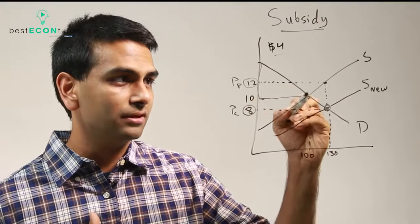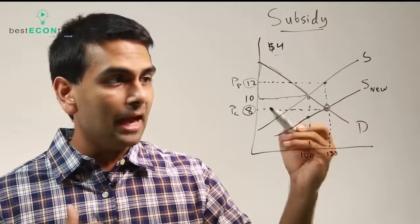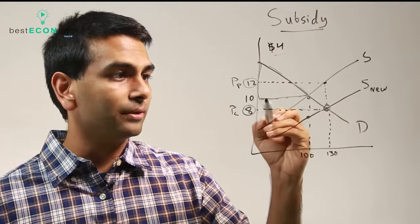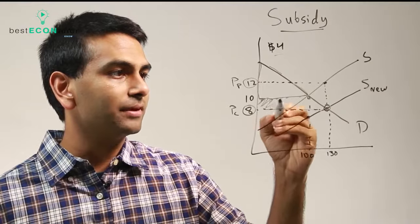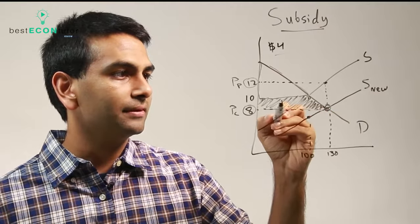The old CS used to be this much—everything above ten dollars underneath the demand. But now, since they're only paying eight, it's everything above eight. So it increases by this much. This is the increase in consumer surplus.